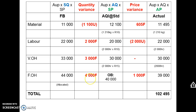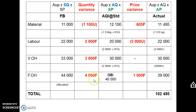To recap: for variable costs we had a quantity and a price variance each time — for material, labor, variable overheads, the formula is the same each time, which is why we can use the table. For fixed overheads, remember: flex the budget to get allocated fixed overheads, write the actual in the right-hand column, and in the middle just put the original budget. Then you'll get your variances — the volume variance on the left-hand side and the spending variance on the right-hand side.